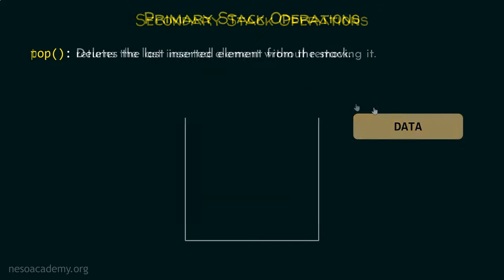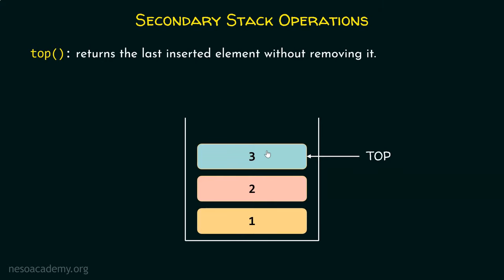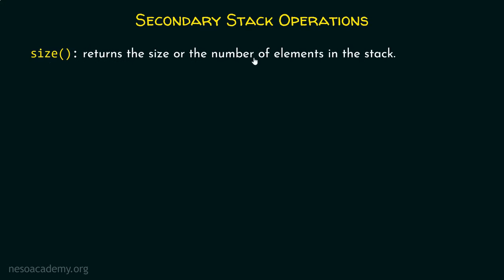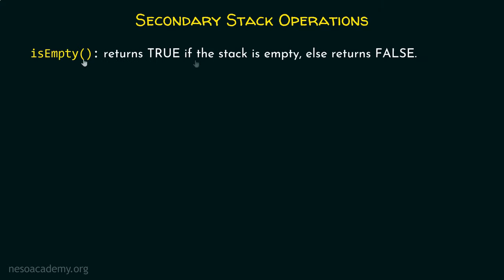There are some secondary stack operations as well. The top operation simply returns the last inserted element without removing it. Imagine a stack with three elements — one, two, and three — where three is the topmost element. A pointer pointing to this element simply returns it without removing it. The size operation returns the size or the number of elements in the stack, so if we have three elements, size will return three. The isEmpty function returns true if the stack is empty, else it returns false.